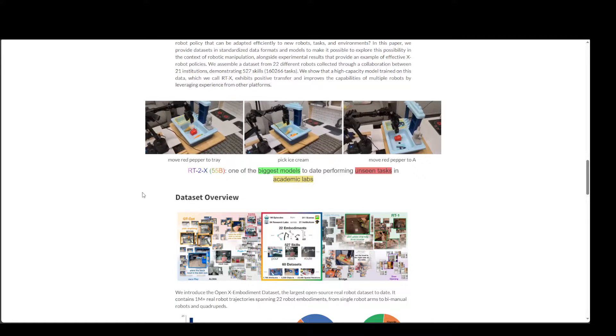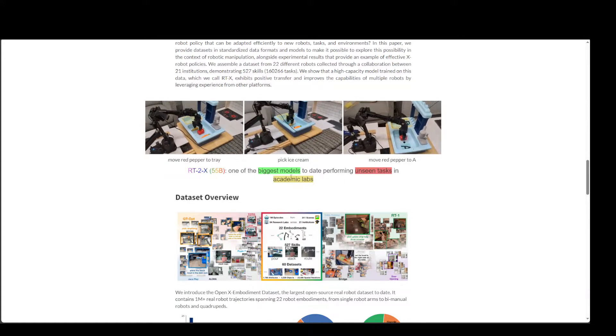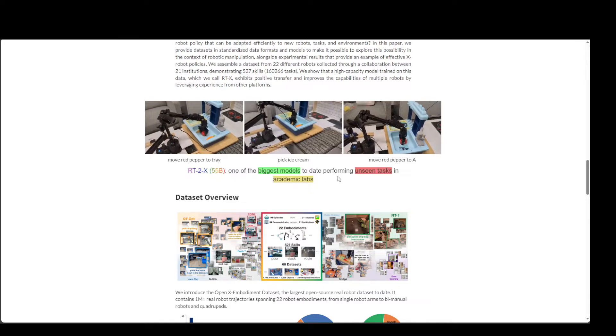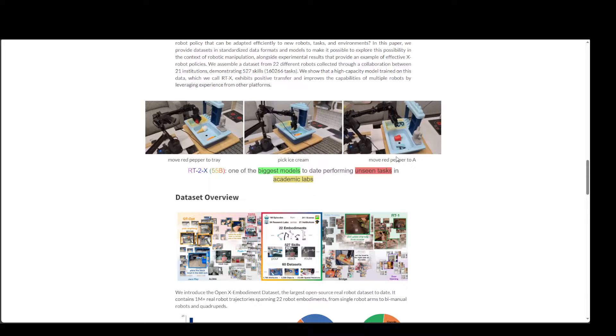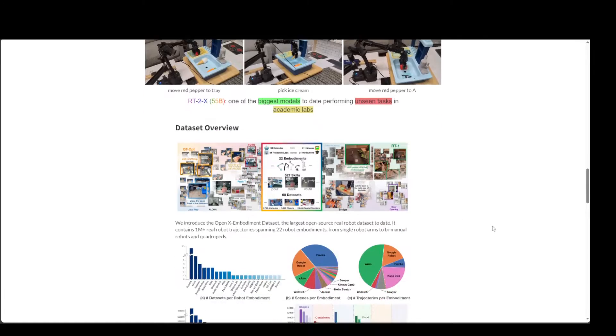And if you see on your screen, there are various tasks this robot is doing. For example, it is picking an ice cream and identifying the ice cream by itself. And from here, it is moving an object from one place to another.